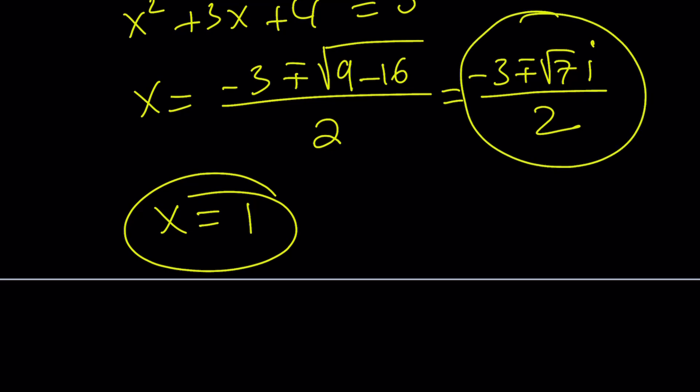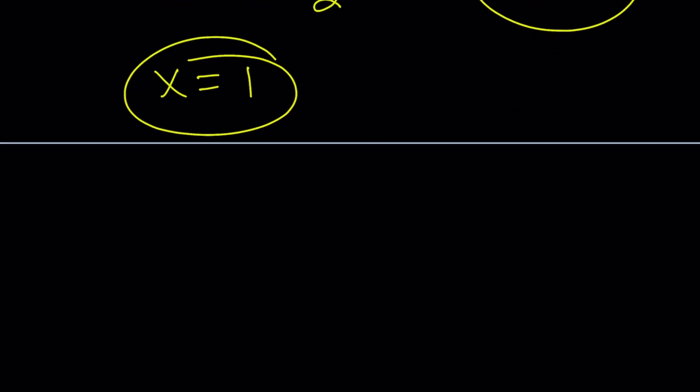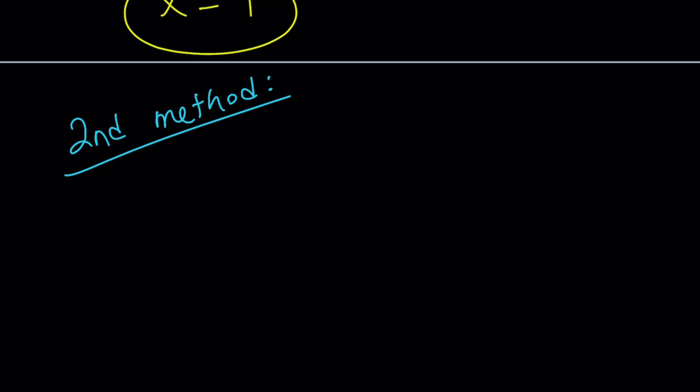Those are two complex non-real solutions and x equals 1 is a real solution. How many solutions do you expect to get? 3 because this is cubic. Make sense? So those are the solutions and that brings us not to the end of this video but to the end of the first method because we still need to do the second method. And are we going to look at a graph? Yes, I think we will. So let's go ahead and proceed with the second method.